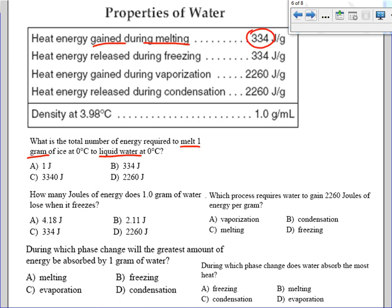How many joules of energy does one gram of water lose when it freezes? You're losing energy, it's being released, it's freezing. Again, it's 334 joules per gram. The best choice would be 334 joules.